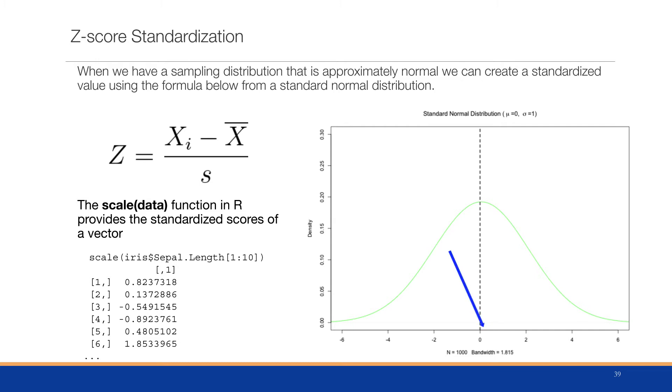0.13 is closer to the mean, again on the right side, so it would be a little bit closer to that zero. The negative 0.54 and negative 0.89 would be over to the left of the mean. And they stand for about a half a standard deviation away and almost one standard deviation away from the mean. The sixth observation here is 1.85. So that's a lot further away. That's almost two full standard deviations away from the mean on the right side.